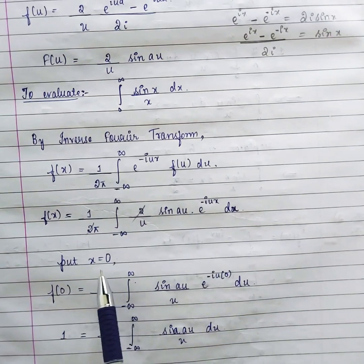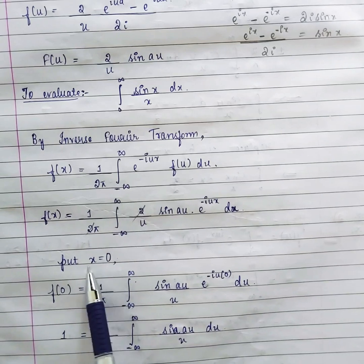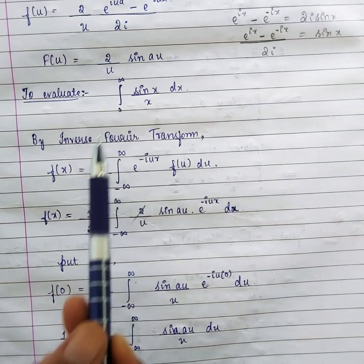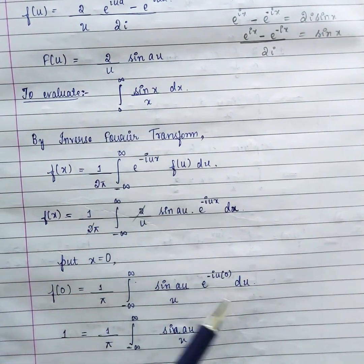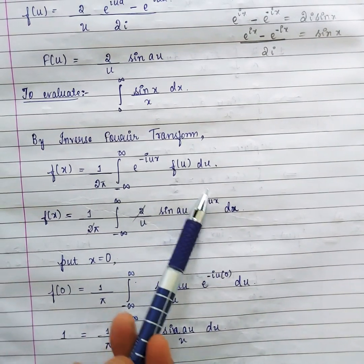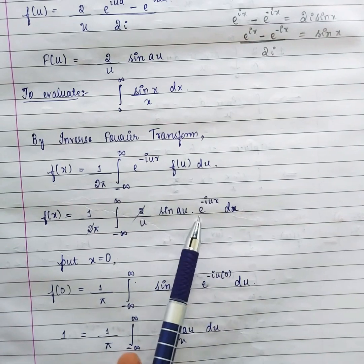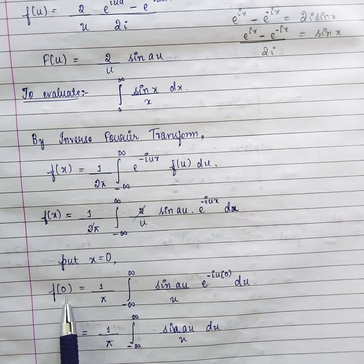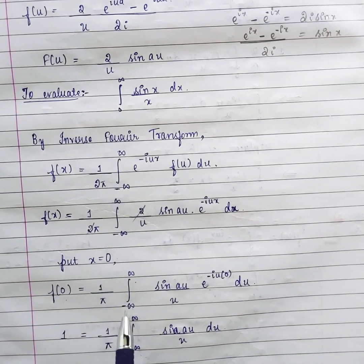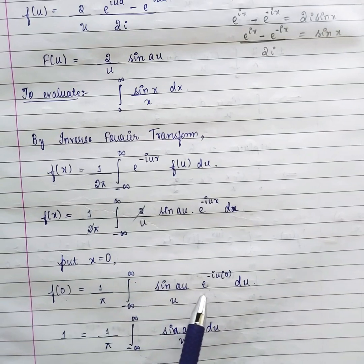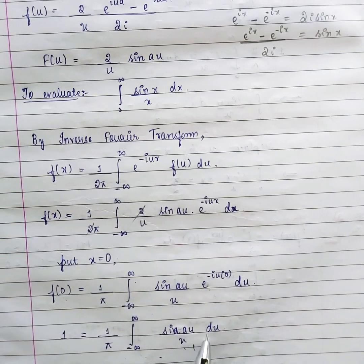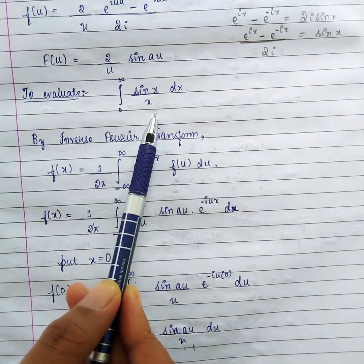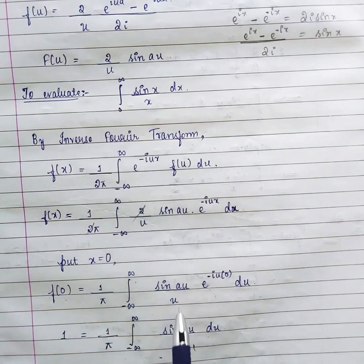Now we substitute a suitable value for x. We substitute x = 0 because the integral we want to evaluate has sin(something)/that and no e^(−iux) term. Setting x = 0 makes e^(−iu·0) = e^0 = 1. So the left-hand side becomes f(0) and the right-hand side becomes 1/π times the integral of sin(au)/u du. Importantly, do not actually integrate — just use the formula as-is.